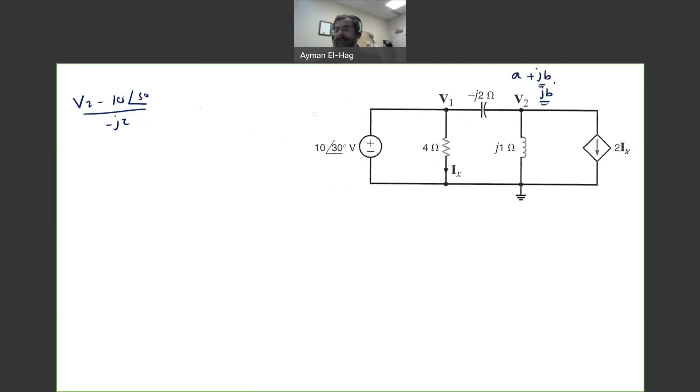How to get rid of it? If it is in the complex format, we multiply by the conjugate. If it is in the imaginary format, we just multiply by the same number. So here I will multiply with j2 over j2. Or I could multiply by j over j. It doesn't really matter. So this will equal to V2 times j2 minus 10∠30° times j2 divided by j2 times j2, which is j square 4 or -4.